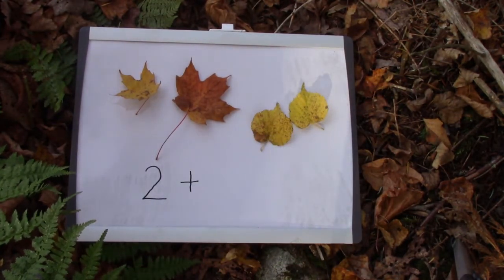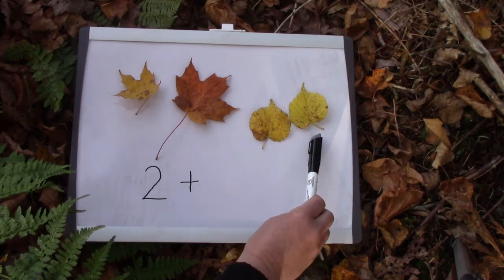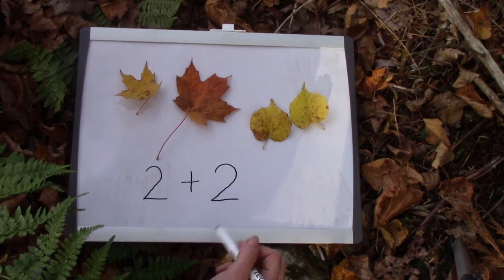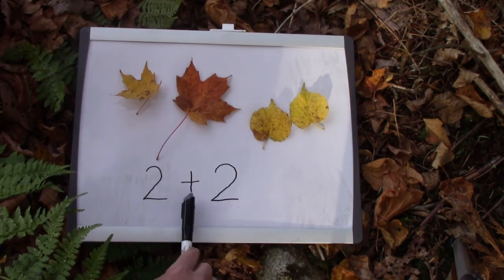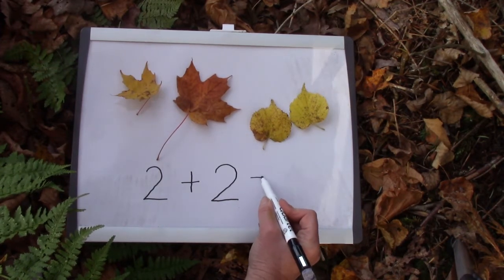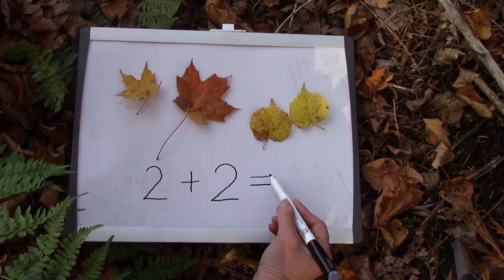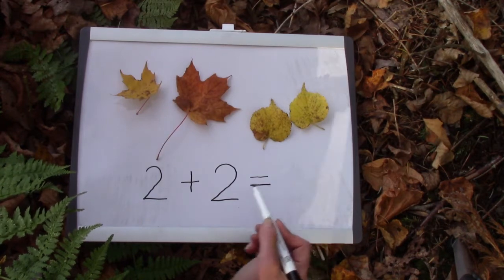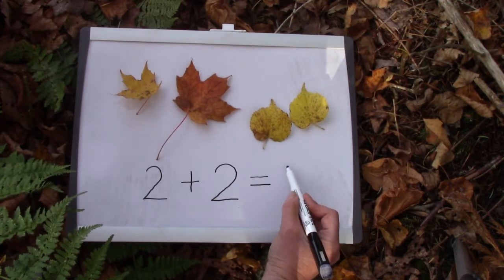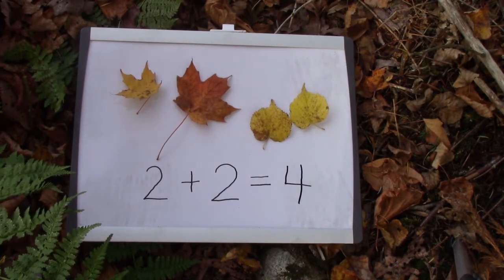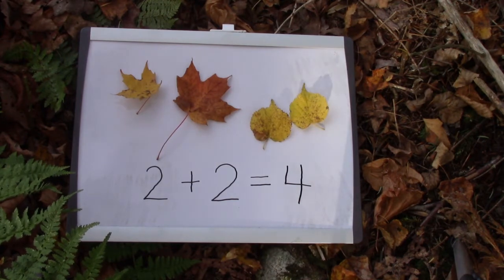We have how many more leaves? Two. So for my number sentence I'm going to write down the number two. Two plus two. Do you know what we write next? It's our equal symbol — two lines that are straight and right beside each other is our equal symbol. Two plus two equals? Do you know how many? You're right, four. That one was easy because that's one of our doubles facts.